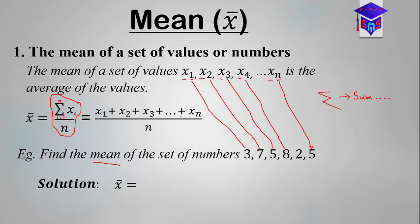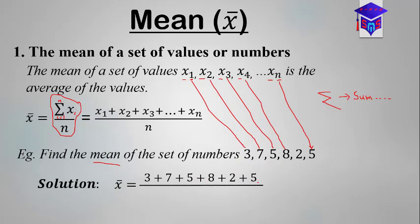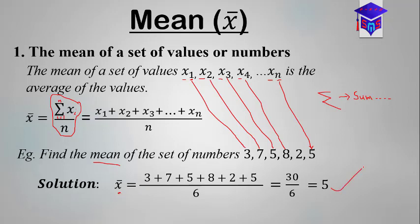These are the x values and you're going to sum them: 3 plus 7 plus 5 plus 8 plus 2 plus 5. Now for n, the number of data points: 1, 2, 3, 4, 5, 6 — so divide by 6. Doing this arithmetic: 3 plus 7 plus 5 plus 8 plus 2 plus 5 gives us 30 over 6. Simplifying gives us 5. So the mean X̄ is equal to 5.